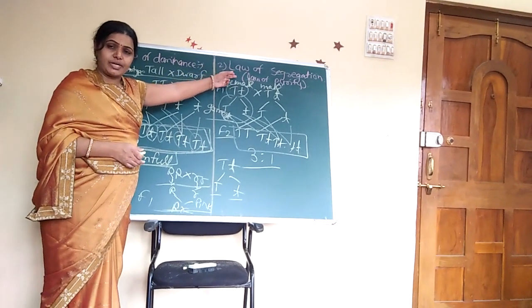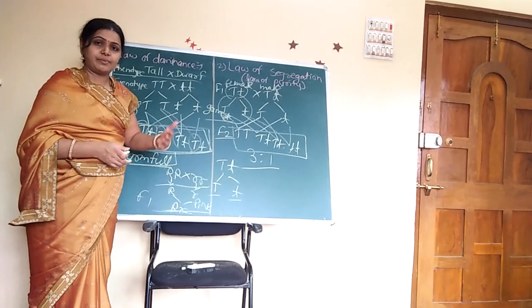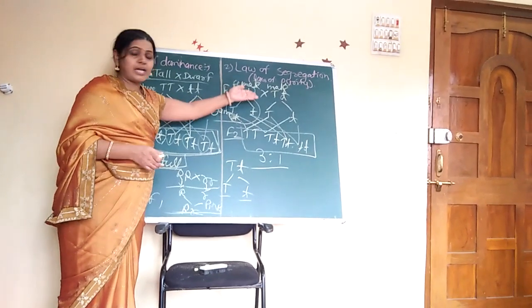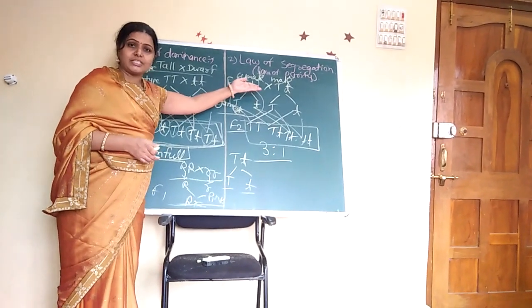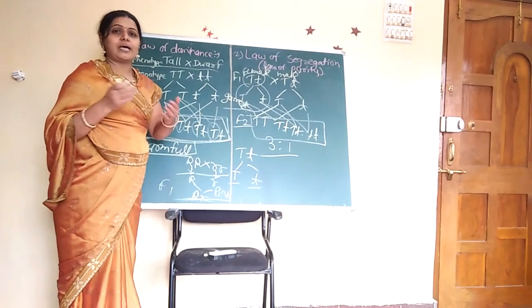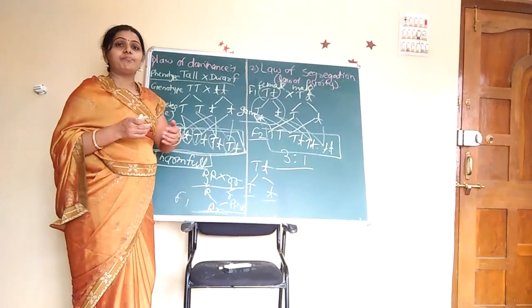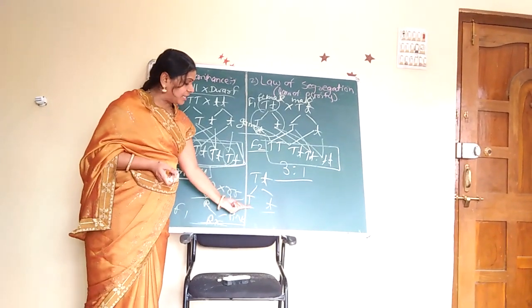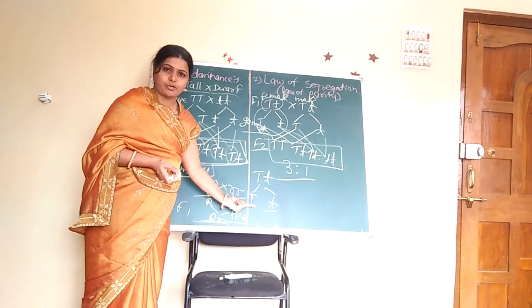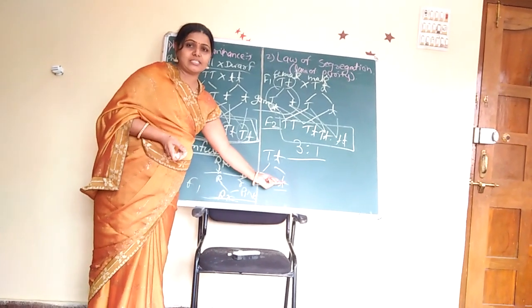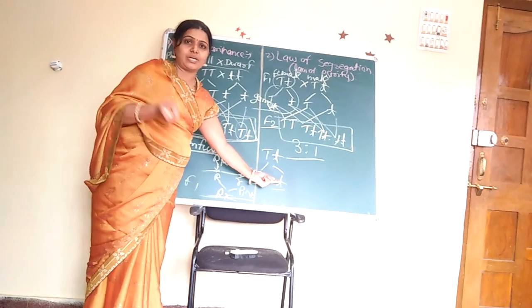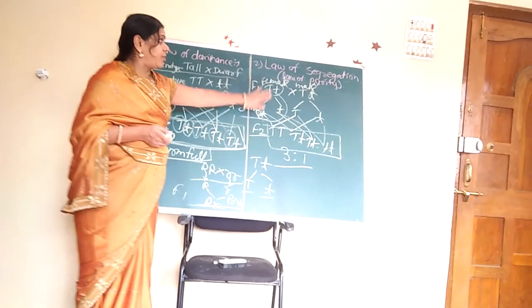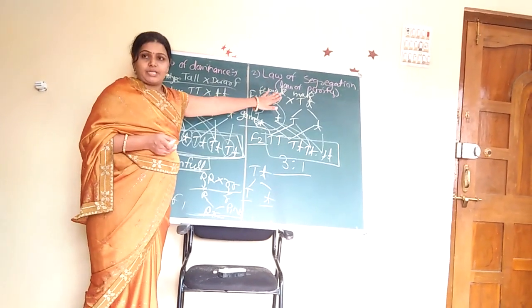The law of segregation is also called the law of purity. Why is it called the law of purity? Because when a full hybrid or the F1 generation forms gametes, pure gametes are formed — that is, one allele shows the pure dominant allele and the other shows the pure recessive allele. That is why it is called the law of purity.